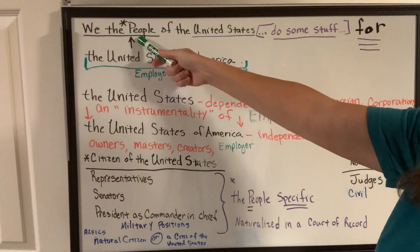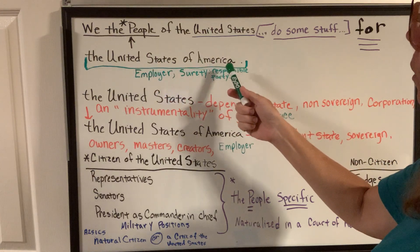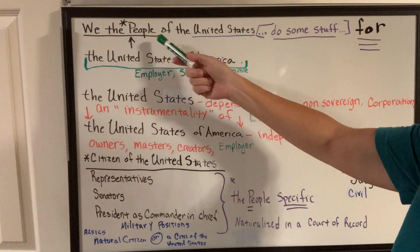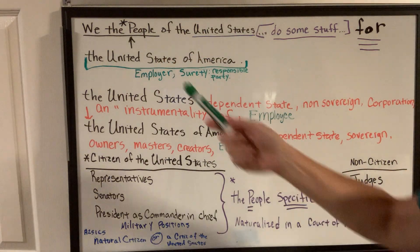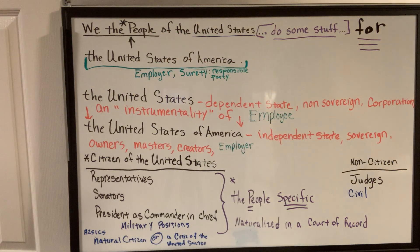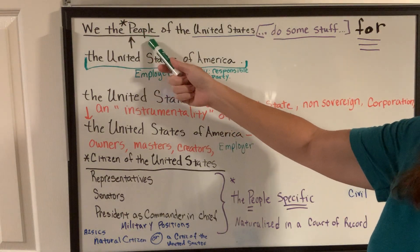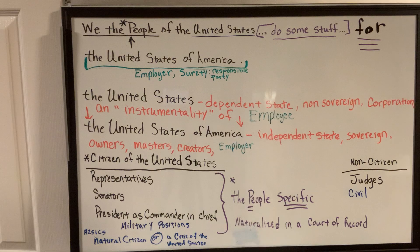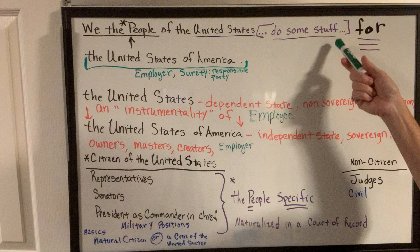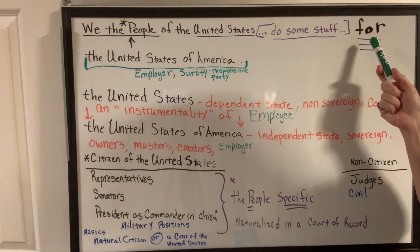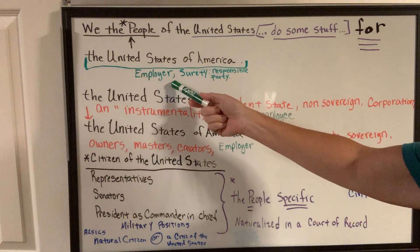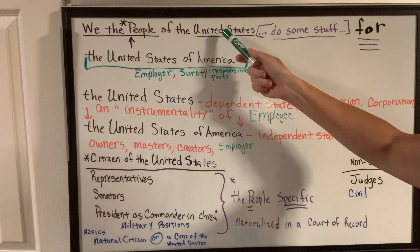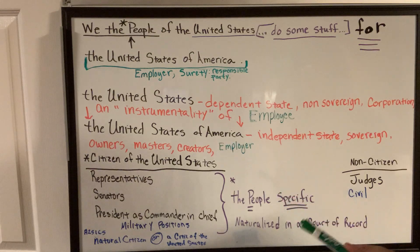They make up and work for the United States of America. So we the people of the federal government — the officers and employees of the federal government, the citizens of the United States — we the employees of the federal government will do some stuff for, and in the Constitution it says they're going to receive some pay for the United States of America. Our employer, our surety, the responsible party — it's up to the states to make sure that its employees are doing their job according to the contract, which is the Constitution.